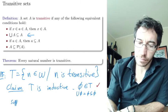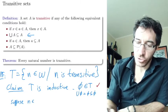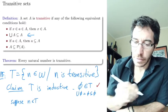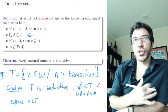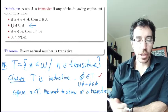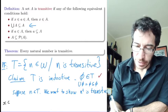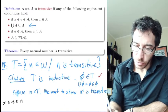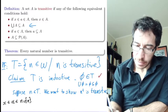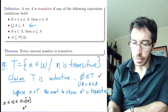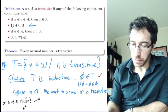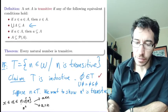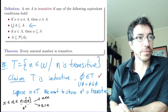Now suppose n belongs to T, meaning n is transitive. We want to show that n-plus is also transitive. Suppose x belongs to some A that belongs to n-plus. Since n-plus equals n union {n}, there are two cases: either A belongs to n, or A equals n.